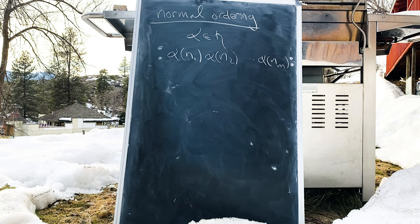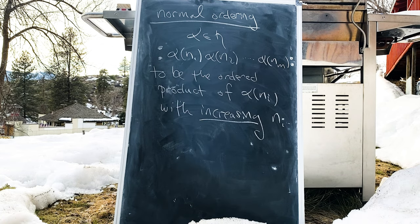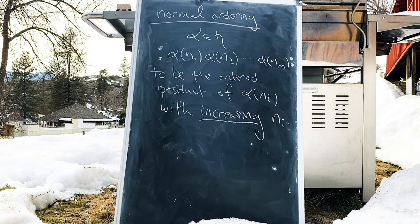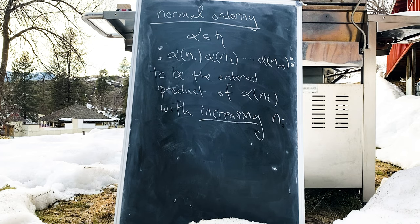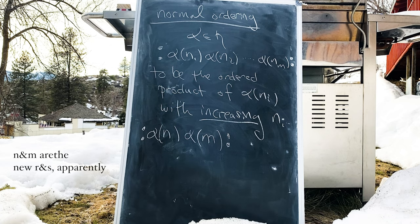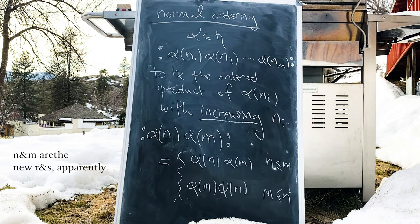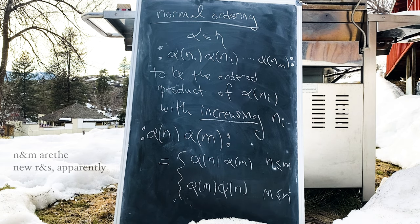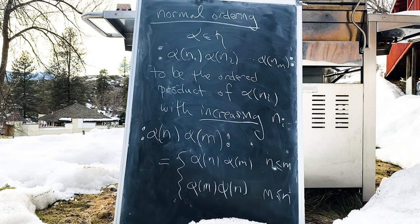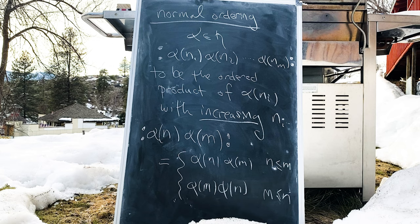To be more precise, we define the normal ordered product of operators, denoted by pairs of dots, to be the product of operators ordered by increasing values of their degree. To be crystal clear, the normal ordered product of two operators, alpha of r and alpha of s, is given by alpha r alpha s if r is less than s, and alpha s alpha r if r is greater than s. Notice that the ordering is irrelevant if r equals s. Given our ultimate desire to simply separate operators of positive and negative degrees, this sort of partial ordering of operators might seem excessive. But it's a fairly simple and intuitive convention, which is why we employ it.